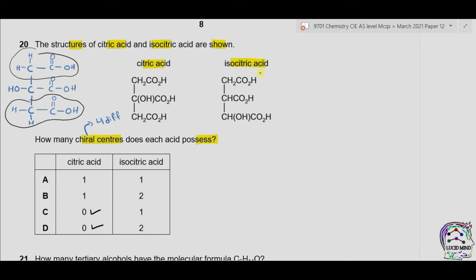Now let's draw isocitric acid. The first carbon has two hydrogens, then a carboxylic acid functional group. On the second carbon we have one hydrogen and one carboxylic acid functional group. On the third carbon we have a hydrogen, OH, and a carboxylic acid functional group.